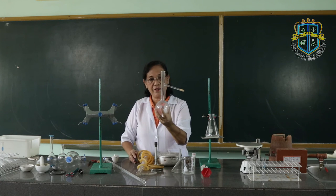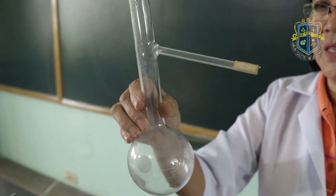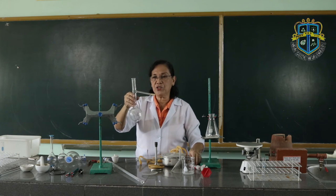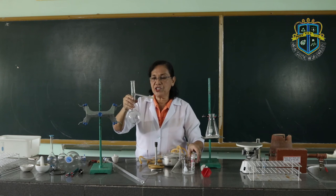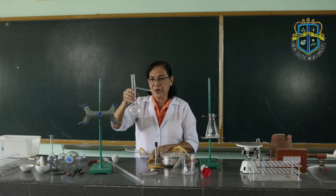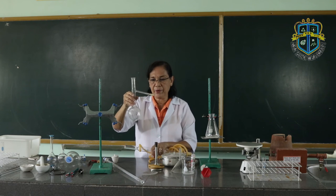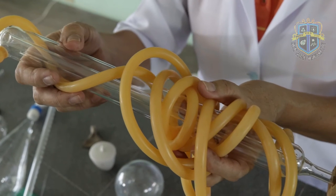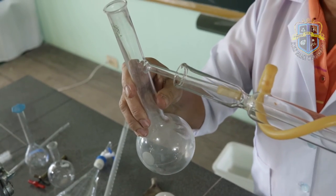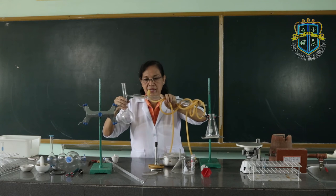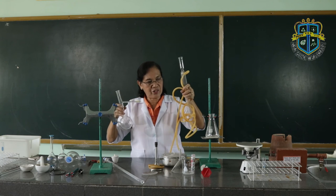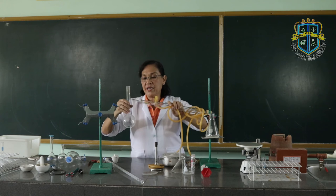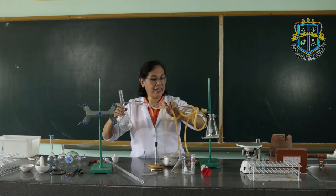This is the distilling flask. The distilling flask is used to contain the liquid to be distilled. In distillation, there are two processes involved: evaporation and condensation. You place the liquid to be evaporated into the distilling flask, and it works together with the condenser. The gas evaporated from the distilling flask is condensed back into liquid inside the condenser.